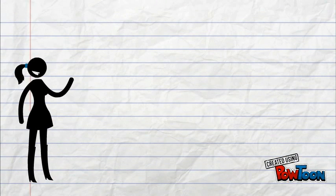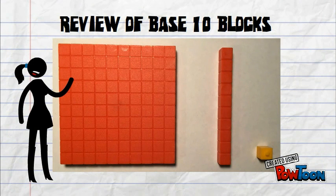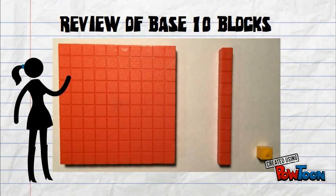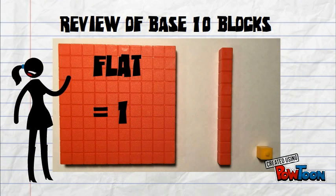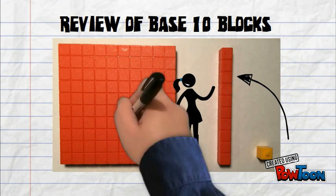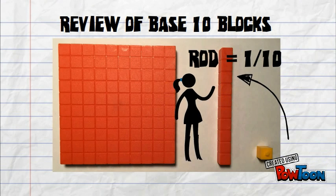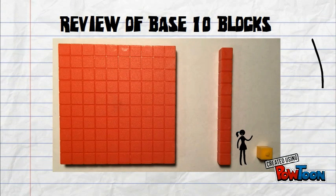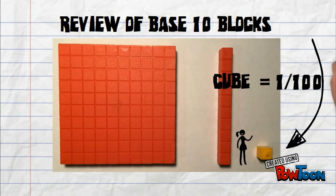Let's start our review of the base 10 blocks. The first base 10 block is a flat. The flat has a value of 1. The second base 10 block is a rod and a rod has a value of 1 tenth. The third base 10 block is a cube and a cube has a value of 1 hundredths.